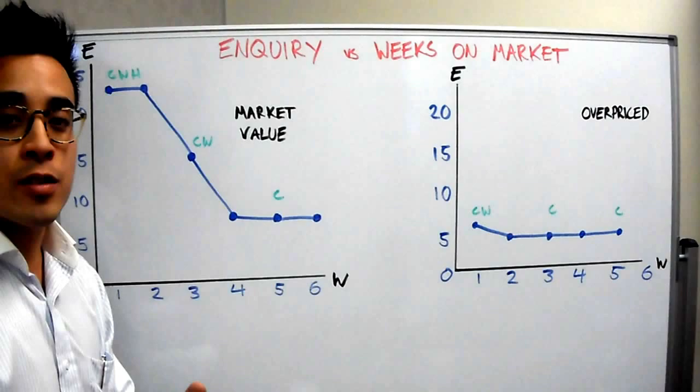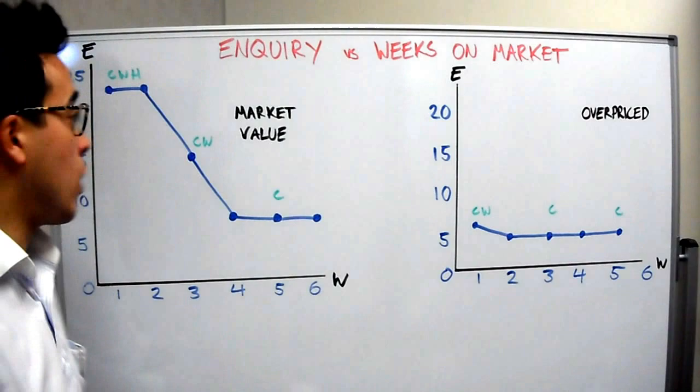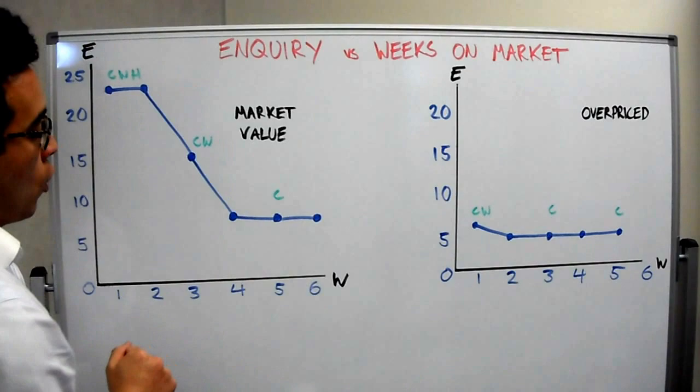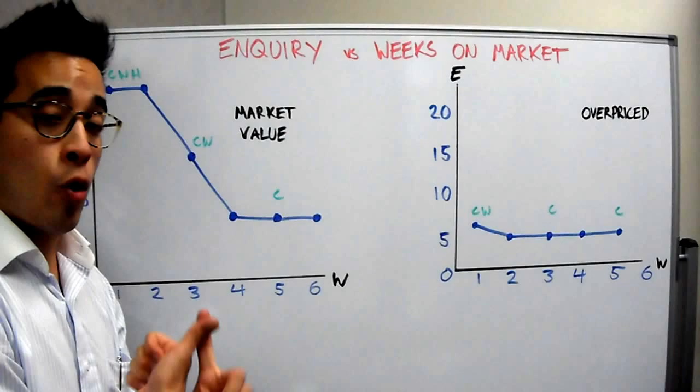So when something fresh comes up on the market, they look at it straight away - they don't even wait for the open for inspection. They look at it straight away because they've missed out on houses before and they don't want to miss out anymore. If this matches their criteria, they call the agent and bang, they look at it straight away. Then it slows down a little bit - you get the cold and the warm buyers, and then you just get the cold buyers.